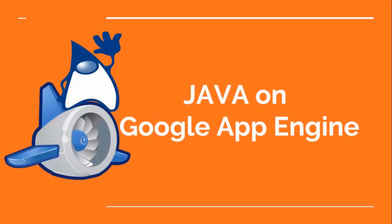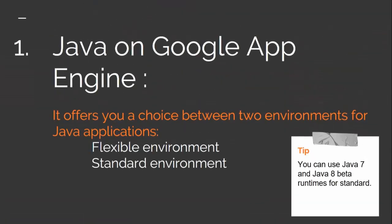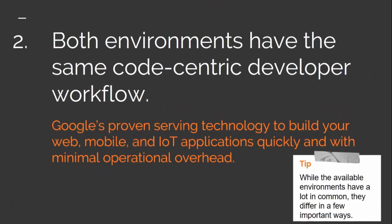App Engine offers you a choice between two environments for Java applications: the flexible environment and the standard environment. Both environments have the same code-centric developer workflow, scale quickly and efficiently to handle increasing demand, and enable you to use Google's proven serving technology to build web, mobile, and IoT applications quickly with minimum operations overhead.